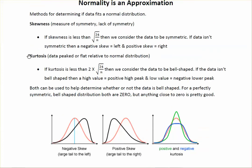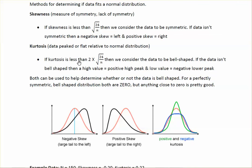Another way to determine whether data is normal is kurtosis — that's whether the data is peaked or flat relative to the normal distribution. If kurtosis is less than 2 times the square root of 24 over n, then we consider the data to be bell-shaped. Like skewness, you'll be given the kurtosis value, so you don't need to calculate it.